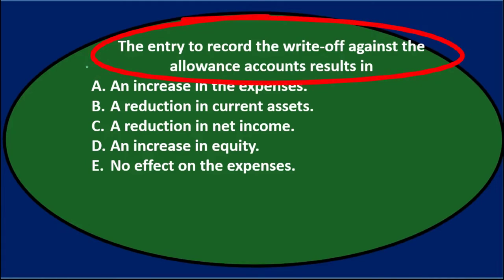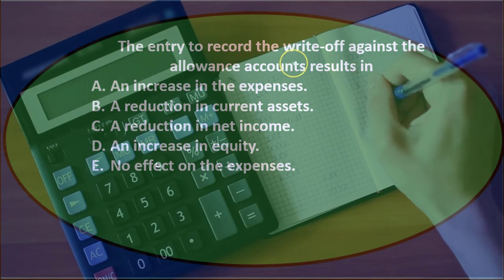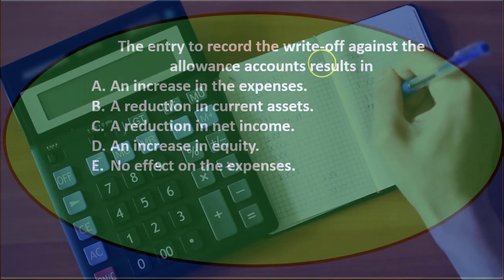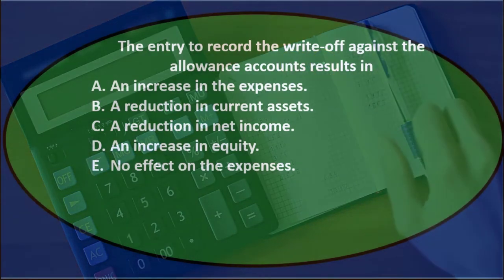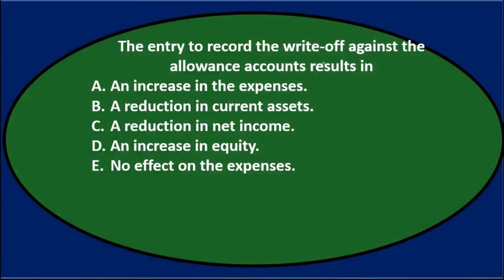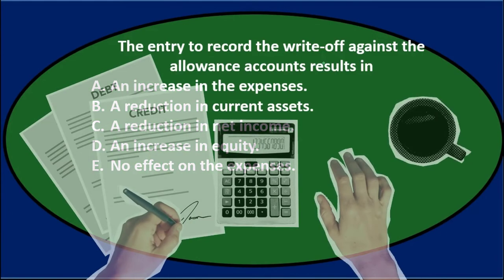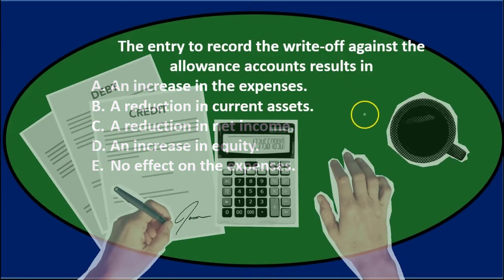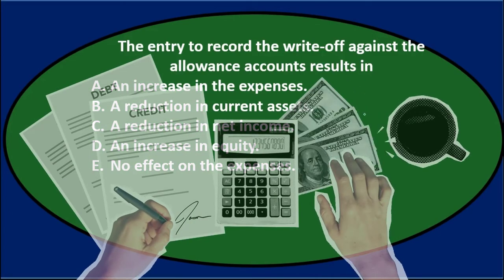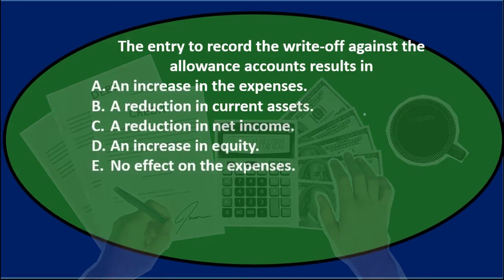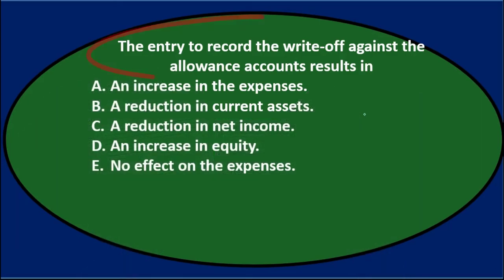Anytime a question mentions an entry, we're talking about a journal entry. Even if no number is given, it's best to write down the entry — what are the debits and credits, what accounts are affected. If you want to make up a number for the debit or credit, that's fine too.